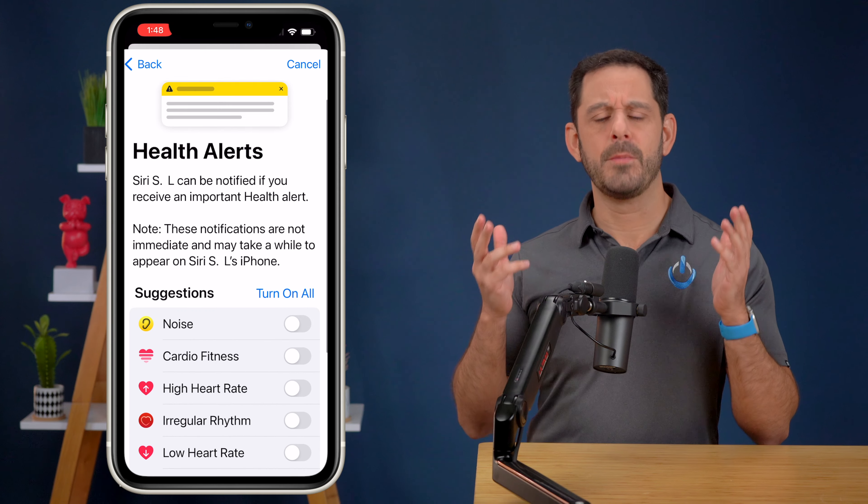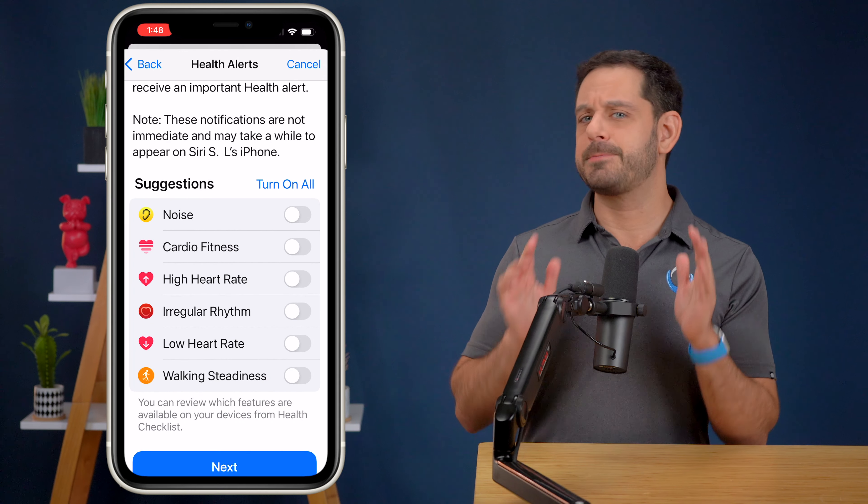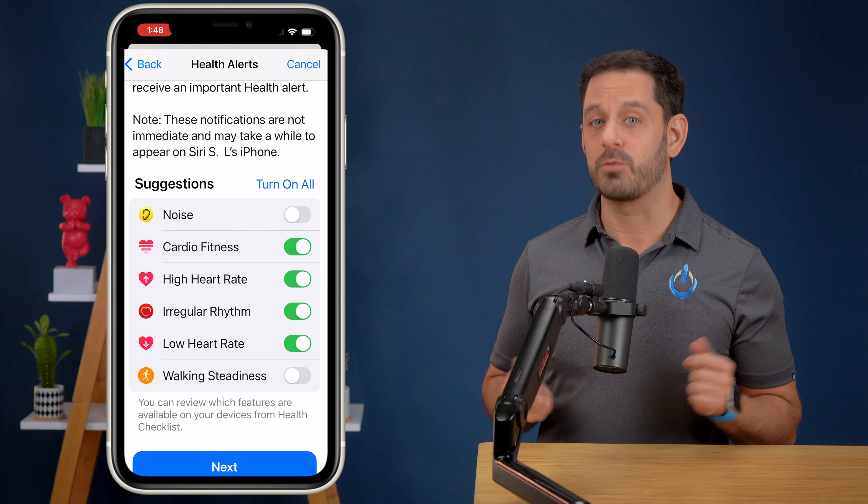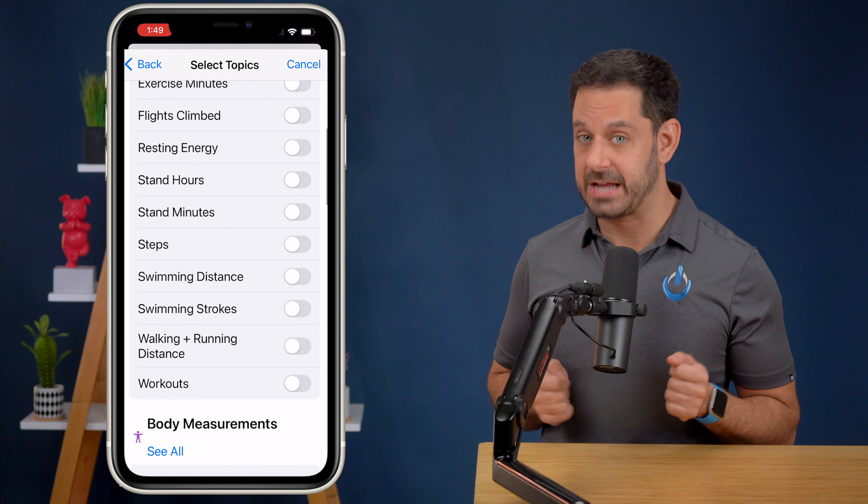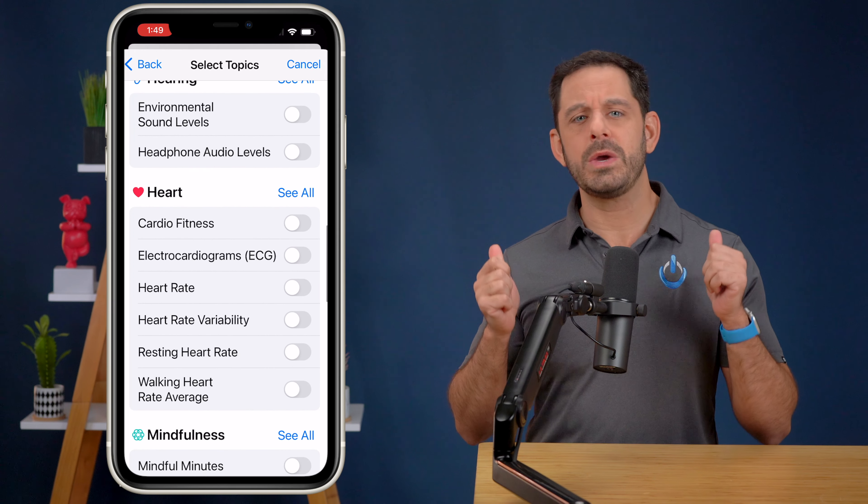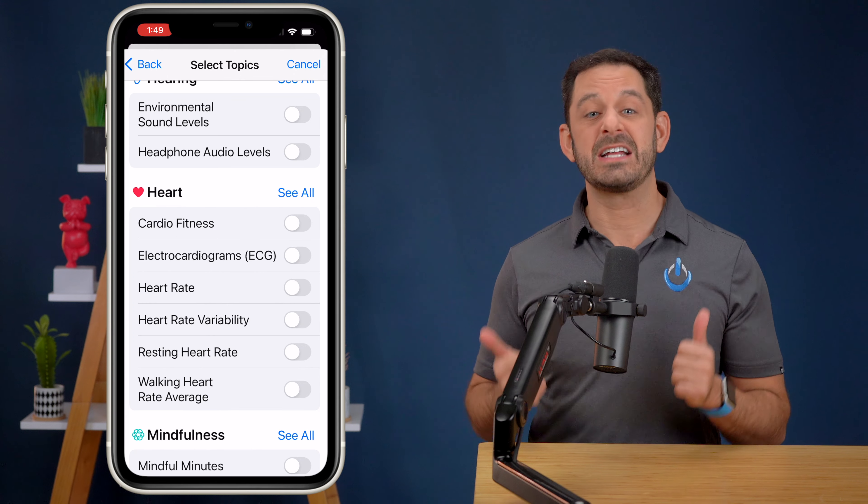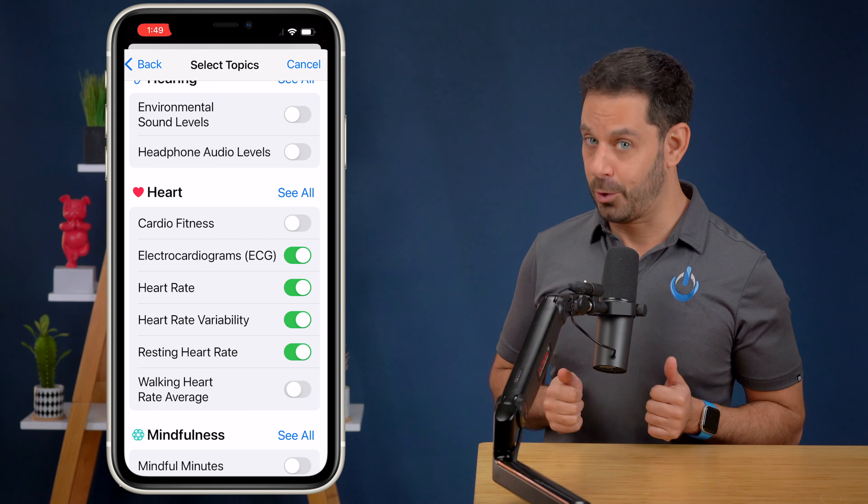Right off the bat, we have some of the most important alerts that you may seriously want to consider turning on, especially if you have cardiovascular issues or a fall risk. If we continue to the next page, you'll see we have several different categories. For example, let's go into heart. Here, you'll see that I can share ECGs, my heart rate, heart rate variability, and much, much more.